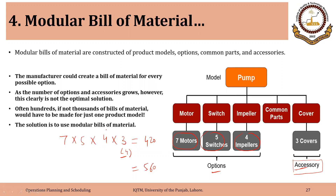To further illustrate, if we add another motor option — say eight types of motors instead of seven — the combinations would increase to 640. That means 80 more options are created by adding just one more feature. This demonstrates how rapidly the number of combinations grows as options are added.